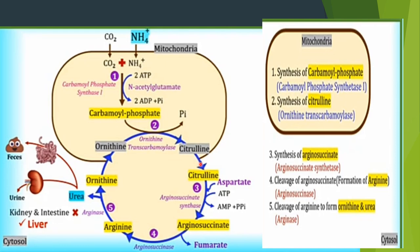Once citrulline enters the cytosol, the third step begins: the synthesis of arginosuccinate. Citrulline combines with the amino acid aspartate to form arginosuccinate. This step is catalyzed by arginosuccinate synthase. ATP is converted to AMP and pyrophosphate; the pyrophosphate is further broken down into two molecules of inorganic phosphate. Overall, two high-energy bonds of ATP are consumed.